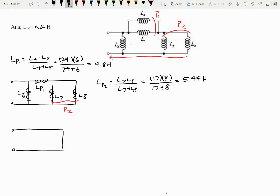Redrawing that one more time, this is L6, this is L parallel one, L parallel two. And I see that these two are now going to be in series. So L series one, LP1 plus LP2, which will give us 4.8 plus 5.44. This will give us 10.24 henrys.